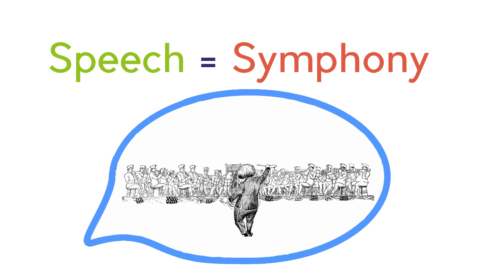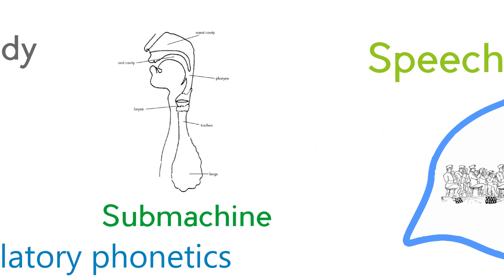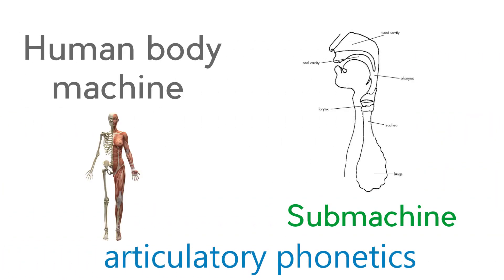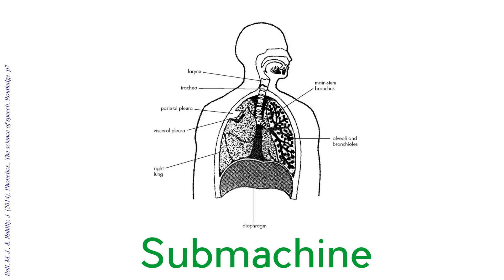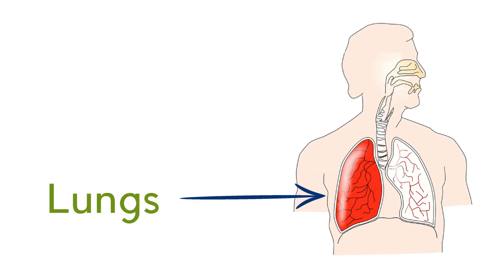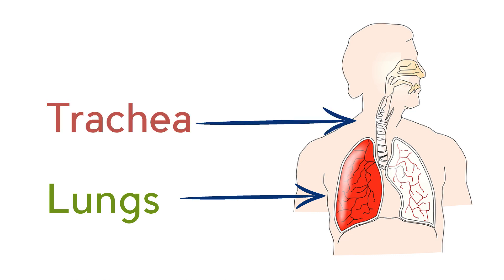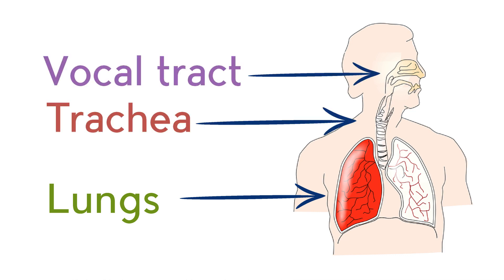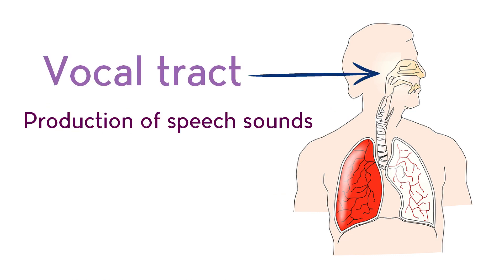Think of this analogy: you can think of speech as a symphony which is produced by a built-in submachine in the human body. If you think of it as a big machine with submachines inside it, articulatory phonetics is about how this submachine works. It consists of the lungs that pump up the air, the trachea, and then the vocal tract. Speech sounds are produced or articulated in the vocal tract.